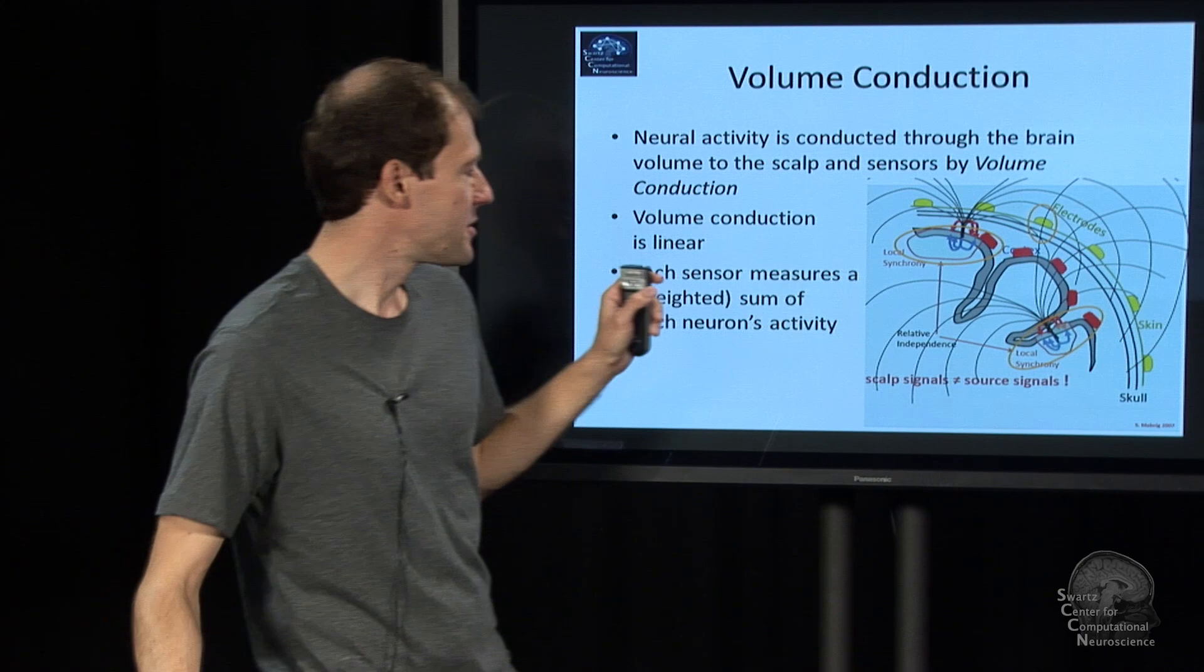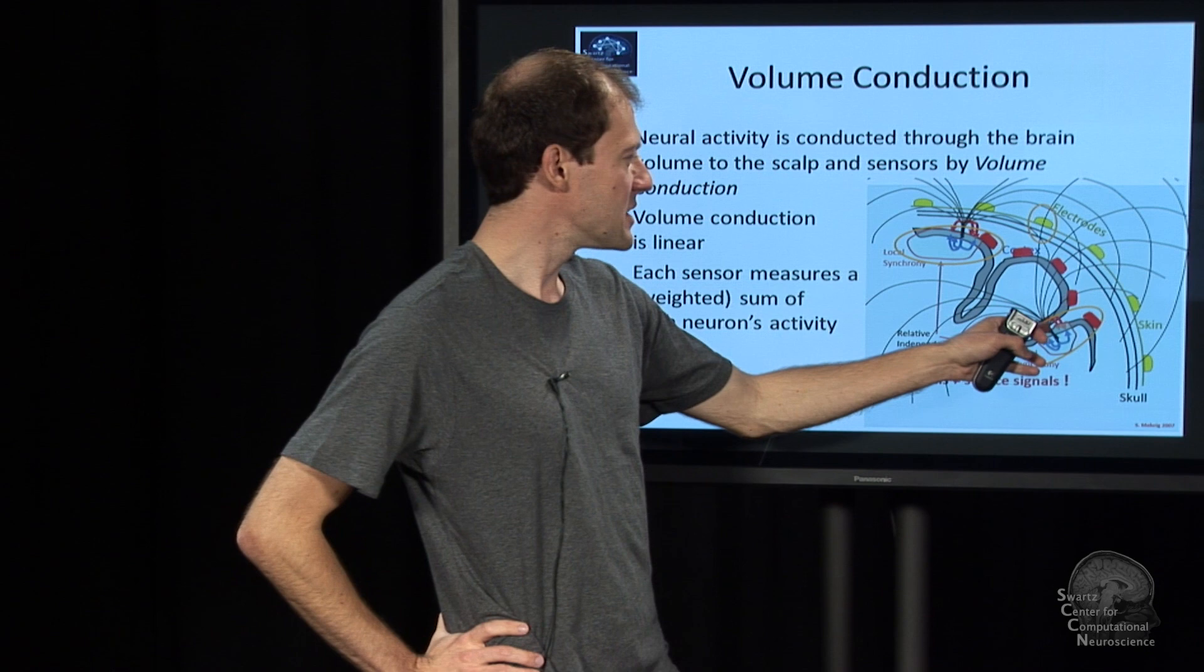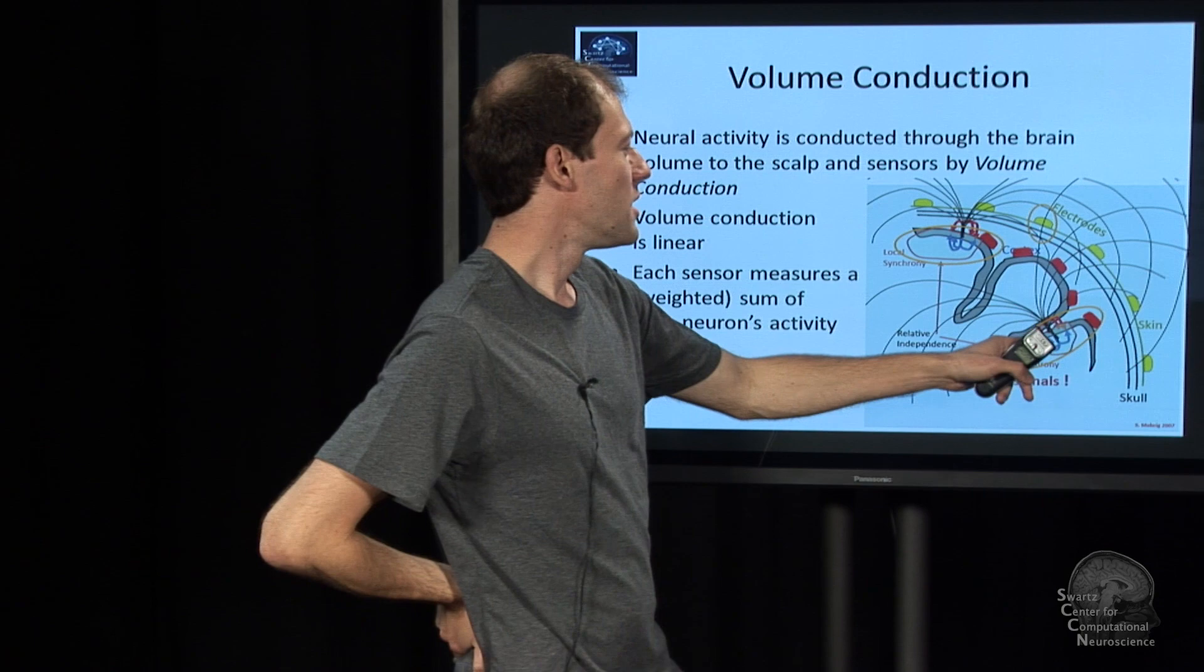The other part is we've discussed where things happen on the cortex, but we haven't really discussed how it gets from there to your sensors. And it may be somewhat non-intuitive. So when a source in the brain, say a patch of cortex fires, it actually produces an electromagnetic field, propagates with the speed of light basically, so instantaneous.